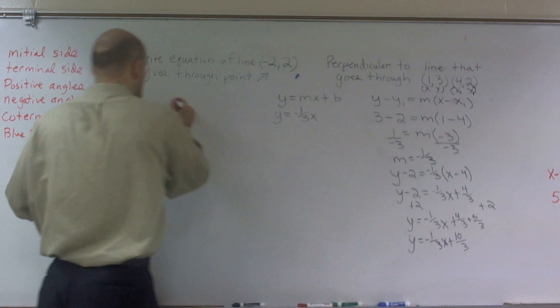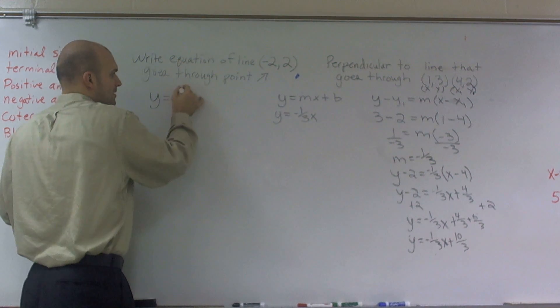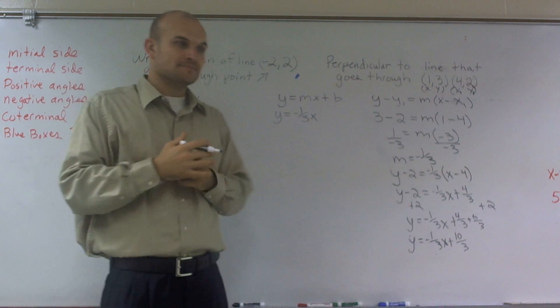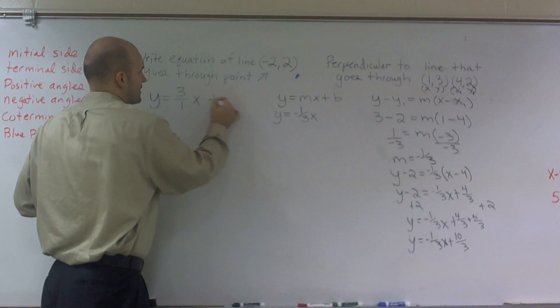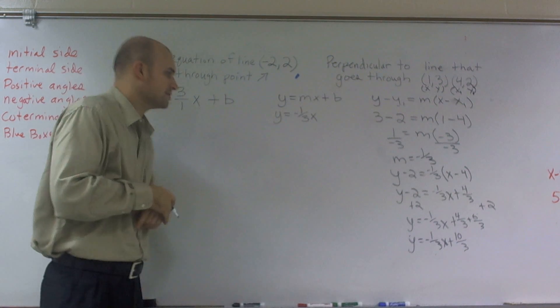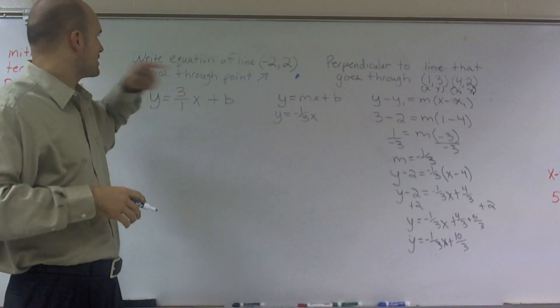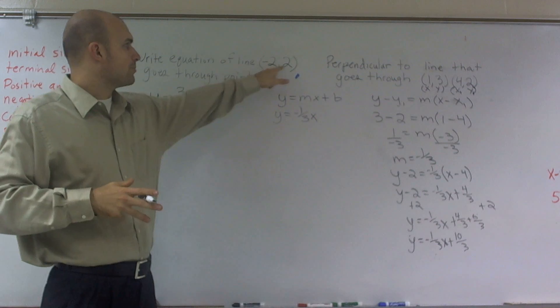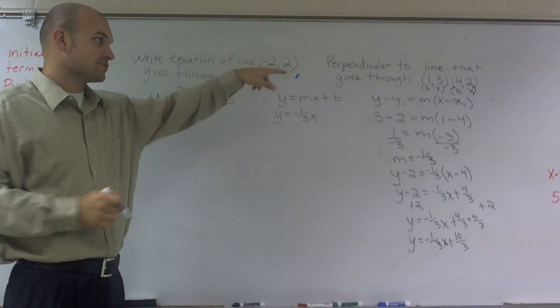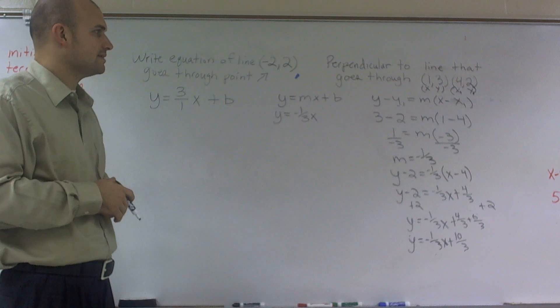So what I'm going to do is write our new equation over here. I'm going to write y equals the opposite reciprocal of negative 1 third, which is a positive 3 over 1 x. Now the only thing we don't know is what b is. So I'm going to write 3x plus b. So to do that, there's a couple methods we could use. It has to go through this point. So we could plug in our point negative 2 comma 2 into this equation and then solve for b.